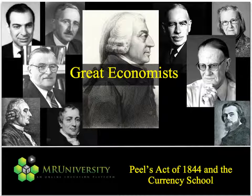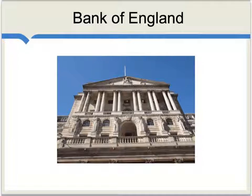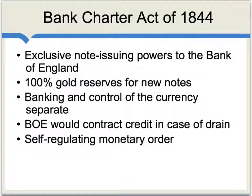For more on 19th century banking and monetary debates, let's now consider Peel's Act of 1844 and the Currency School. This act has to do with regulating the Bank of England. Formerly, Peel's Act was called the Bank Charter Act of 1844, and as an introductory overview, it did the following.